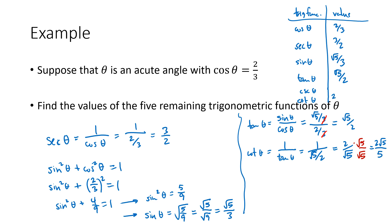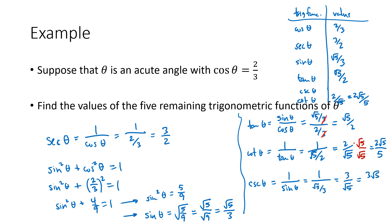For me personally, when I teach this material, I don't insist that we rationalize denominators, but some teachers do. So if you do need to rationalize that denominator, we would just multiply top and bottom by the square root of five, giving us two radical five on the top and five on the bottom. Both of those are the same expression. If your teacher insists on rationalizing denominators, we would write that as two radical five over five. Finally, cosecant is the reciprocal of sine, so that's one over sine of theta. Sine of theta we figured out was square root of five over three, which gives us three over the square root of five.